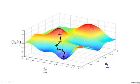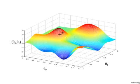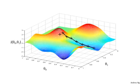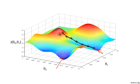Gradient descent has an interesting property. The first time we ran gradient descent, we started at one point and converged to a local minimum. Now imagine we had initialized gradient descent just a couple steps to the right. If you repeat this process — start from that point, look all around, take a little step in the direction of steepest descent, and so on — gradient descent would have taken you to a different, second local optimum on the right. So depending on where you start, you can wind up at very different local optima. This is a property of gradient descent that we'll say more about later.